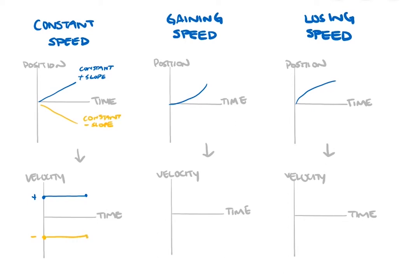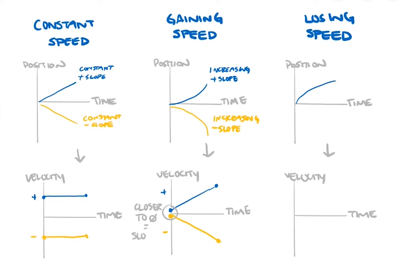Let's look at our fox gaining speed. If the fox is gaining speed in the positive direction, the position-time graph shows a positive slope, so our velocity values will be in the positive region of the graph. Since the slope of the position-time graph is increasing as the fox gains speed, our velocity values should grow in magnitude away from the x-axis. Similarly, if the fox were moving in the negative direction gaining speed, the position-time graph shows a negative increasing slope, so the velocity-time graph should start in the negative region and grow in value away from the x-axis. The zero on the y-axis represents zero velocity — the closer our values are to the x-axis, the slower the object, and the further from the x-axis, the faster the object, regardless of whether we're above or below.